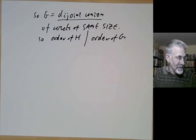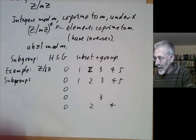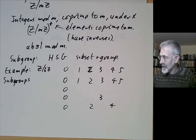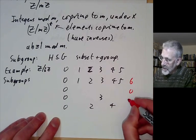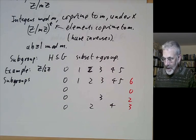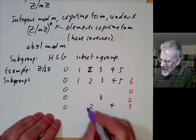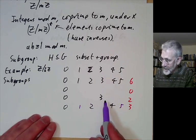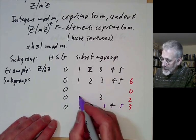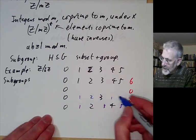Going back to the earlier example, this cyclic group of order 6 has four subgroups, and the orders of the subgroups are 6, 2, and 3, all of which divide 6. For each of these subgroups you can see the various cosets. For instance, a coset of the subgroup of order 2 would be 1, 3, and 5. This subgroup has three cosets — you can add 1 or 2 to the elements.